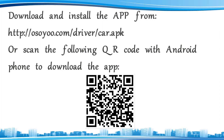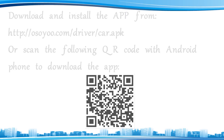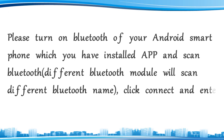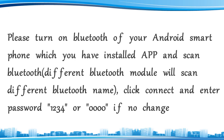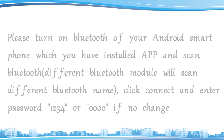Testing: Download and install the application from the osou.com web link, or scan the QR code with your Android phone to download it. Turn on Bluetooth on your Android smartphone and scan for Bluetooth devices. Different Bluetooth modules may appear under different Bluetooth names. Click Connect and enter the password 1234 or 0000 if unchanged.